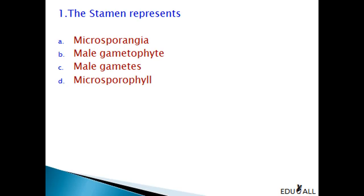The stamen represents: Microsporangia, Male Gametophyte, Male Gametes, or Microsporophylls. The options given are homologies of the different parts of the male reproductive unit, where Microsporangia represent pollen sac, Male Gametophyte represents germinating pollen grain, Male Gametes represent the Microspore or pollen grain, and Microsporophylls represent stamen. Hence, the right answer is D — stamen represents Microsporophylls.